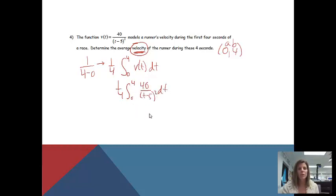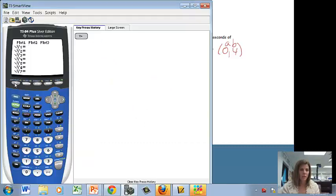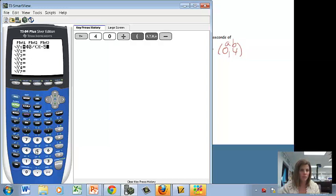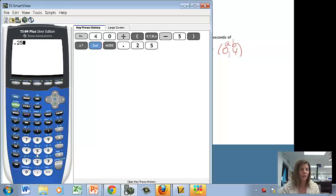Now at this point, let's grab our calculators out. We're back at y equals, and we're going to plug in that formula, which was 40 divided by x minus 5 squared. Then I'm going to quit. What was on the outside? It was 1 fourth, so I'm going to put in 0.25 so I don't have to do a bunch of parentheses. And then again, we want the integral, so we'll do math 9.